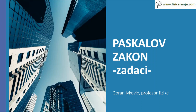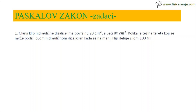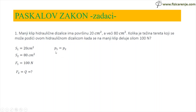Paskalov zakon — zadaci. S1 je 20 cm², to je površina manje klipa. Veći klip S2 je 80 cm². Sila kojom se deluje na manji klip je 100 N i traži se kolika je sila na većem klipu, odnosno kolika težina se može podići na većem klipu. Krećemo od izjednačavanja pritiska.